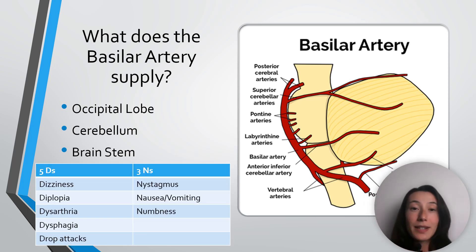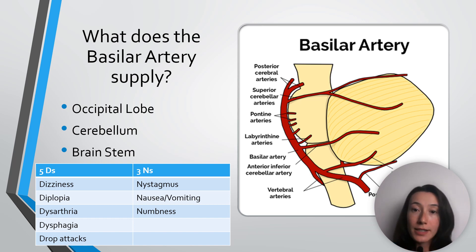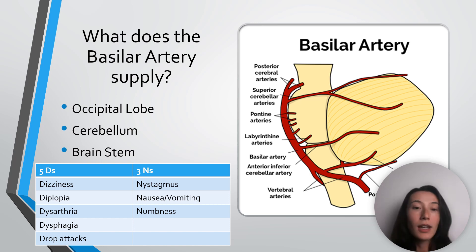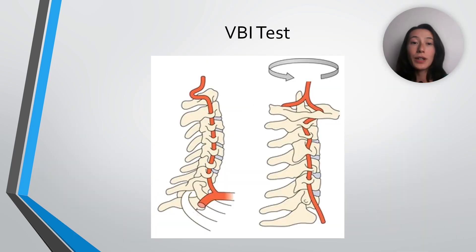It's finally time to make sense of these five D's and three N's — those terms you just have to memorize. If there's something wrong with the occipital lobe, what would you expect to see? Probably visual changes — aka diplopia. If there's something wrong with the cerebellum, what would you expect? Dizziness, nausea, slurring of words — aka dysarthria. And if there's something wrong with the brainstem, you'd expect unstable hemodynamics. By thinking this way, you're connecting the dots. Now we know where it's happening, why it's happening, and what is happening.